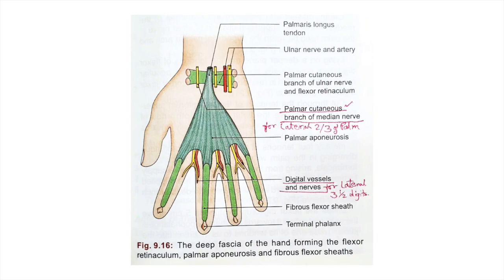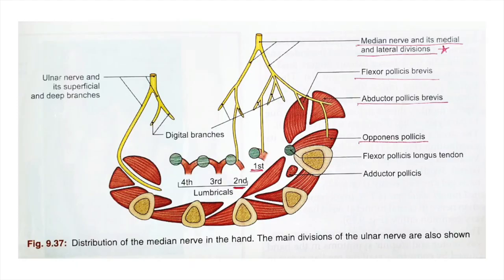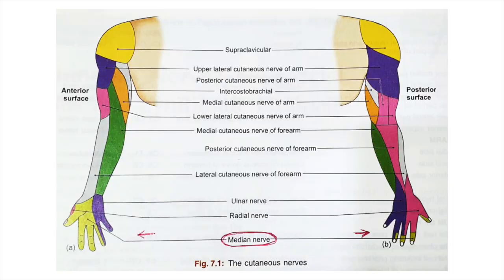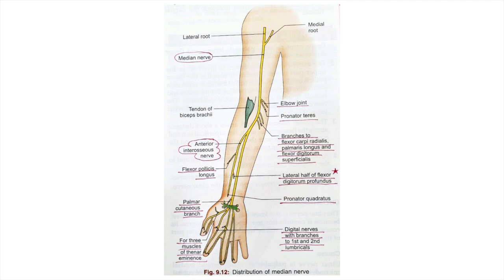After passing below the flexor retinaculum, deep inside the palm, the median nerve innervates five intrinsic muscles: three of the thenar eminence — abductor pollicis brevis, flexor pollicis brevis, and opponens pollicis — as well as the lateral two lumbricals. It also gives digital cutaneous branches for the skin of the lateral three and a half digits, including their nail beds on the dorsum.